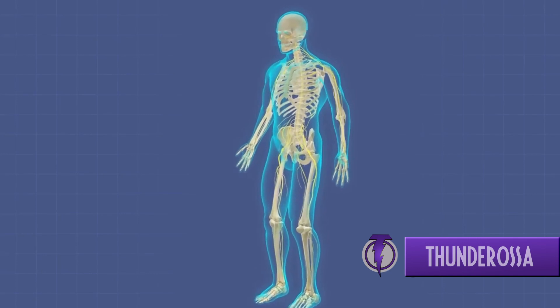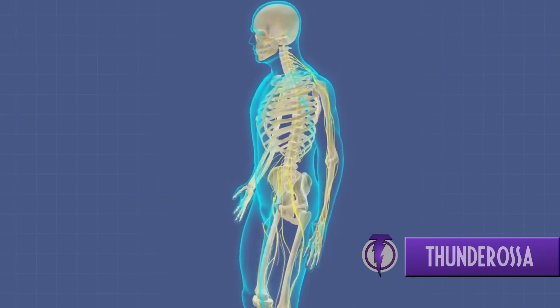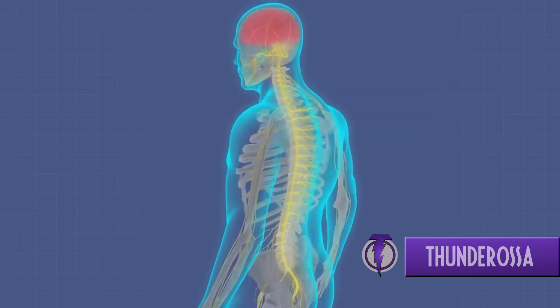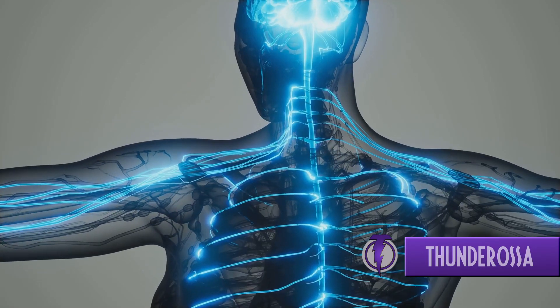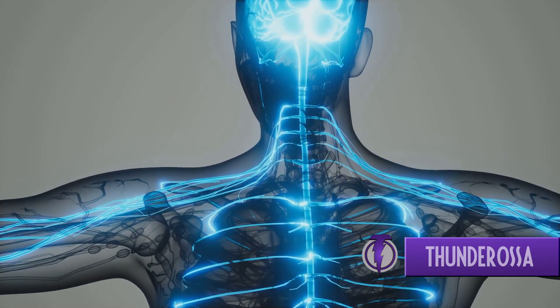How does your body know to pull your hand away from a hot surface, or to blink when something is coming towards your eye? Well, it's all thanks to an intricate network known as the nervous system.